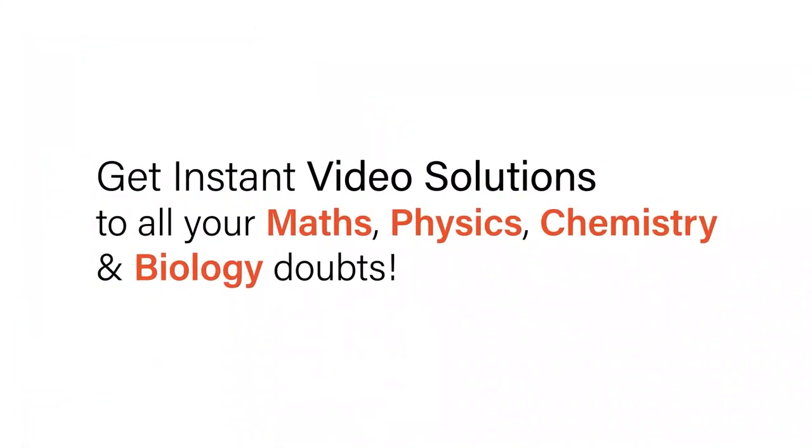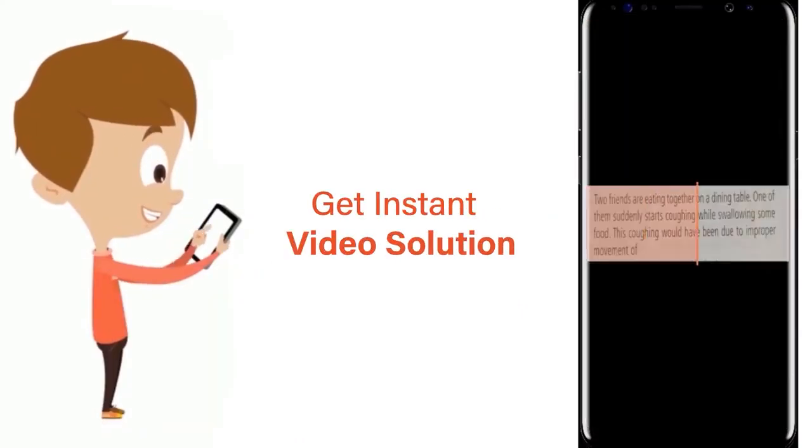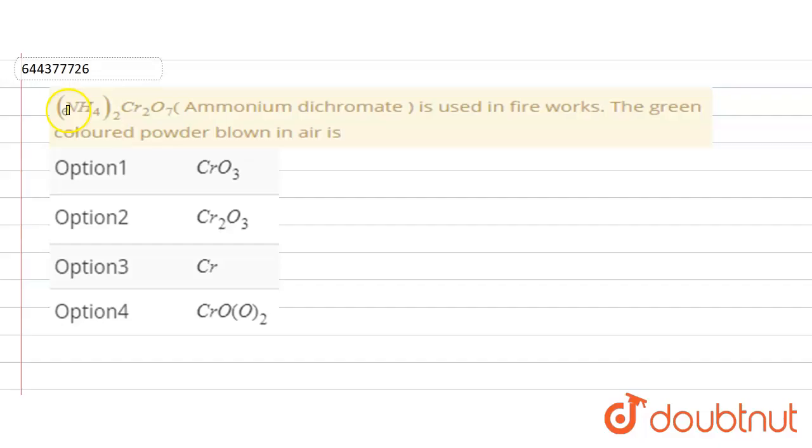With Doubtnut, get instant video solutions to all your maths, physics, chemistry, and biology doubts. Just click the image of the question, crop the question, and get an instant video solution. Download Doubtnut app today. Our question is NH4Cr2O7...